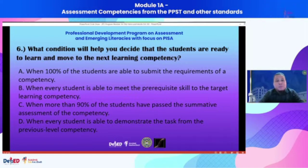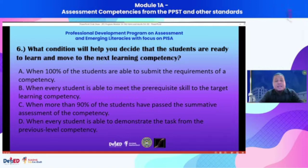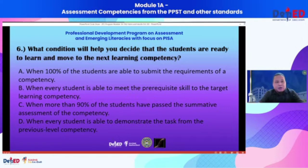Option B says when every student is able to meet the prerequisite skill to the target learning competency. Option C says when more than 90% of the students have passed the summative assessment of that particular competency. And option D says when every student is able to demonstrate the task from the previous level competency.